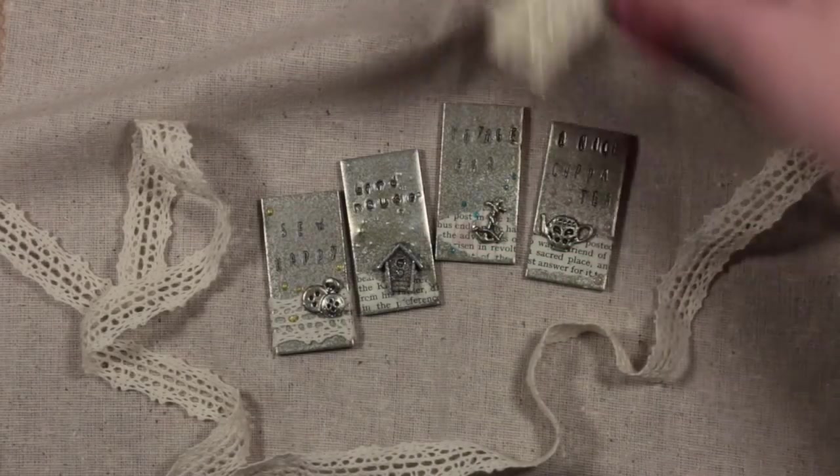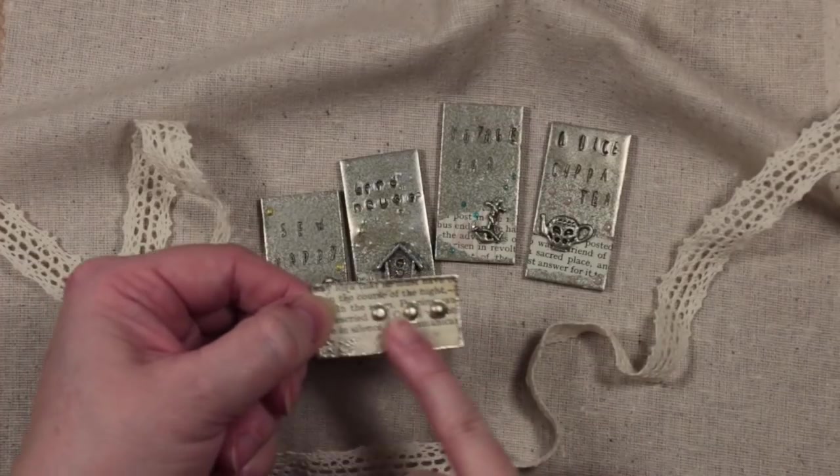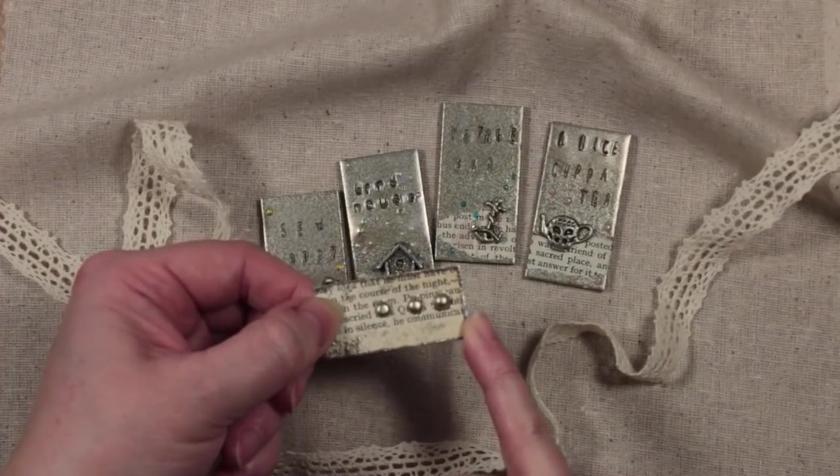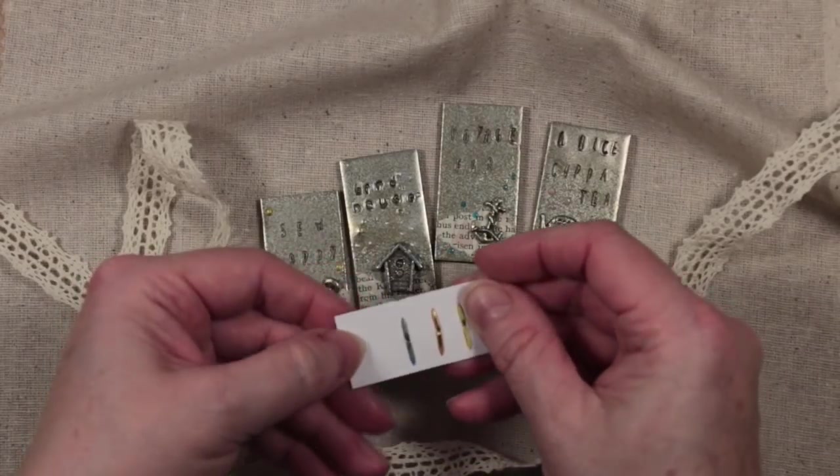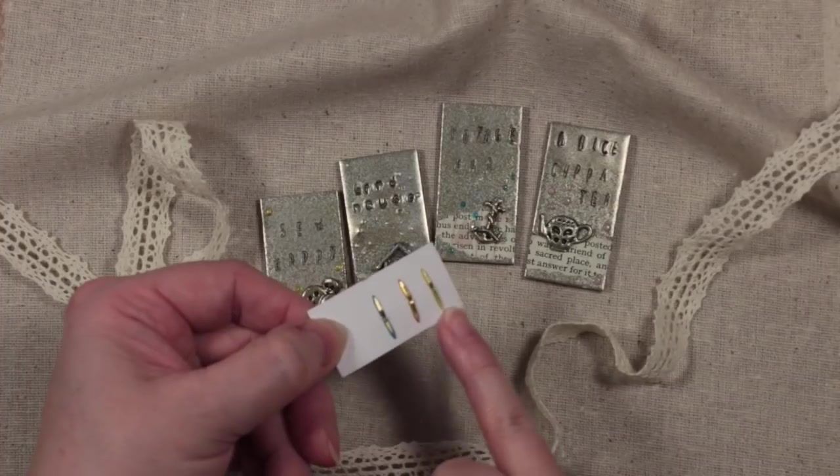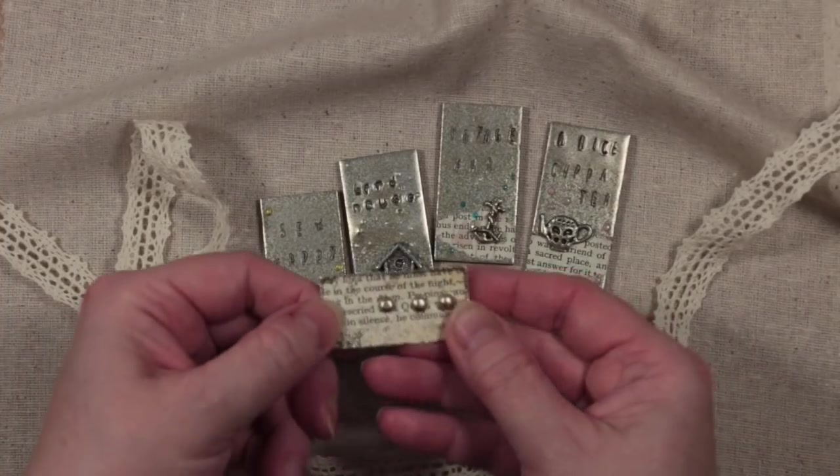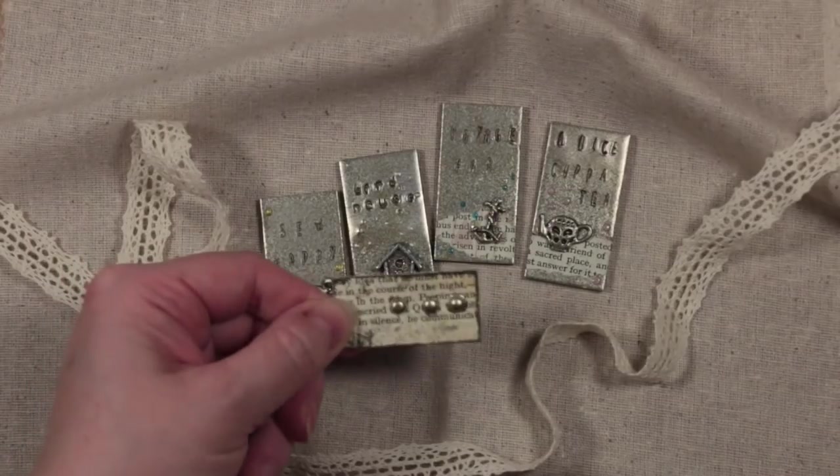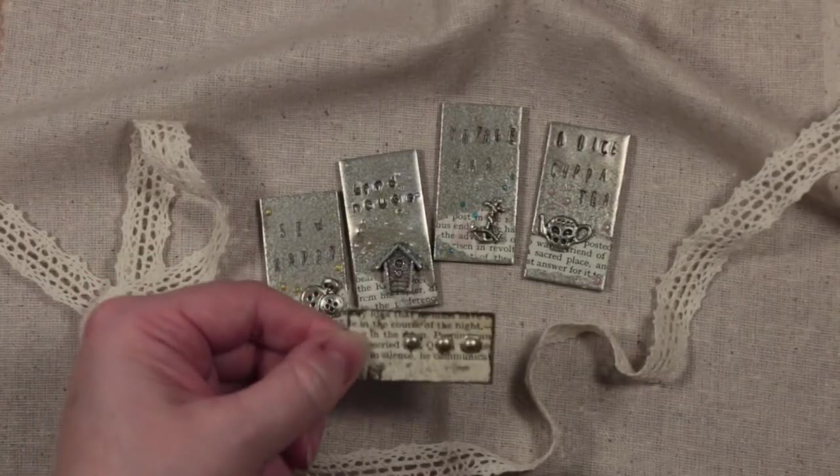I'm also going to show you how you can transform any old brads that you may have in different colors that don't suit your project into metallic so that it will suit your project. As an example, maybe you can see the colors on the back of these legs which haven't been embossed. This is yellow, orange, and blue, so that's how they started and this is how they finished up after they'd had some metal effect added to them.